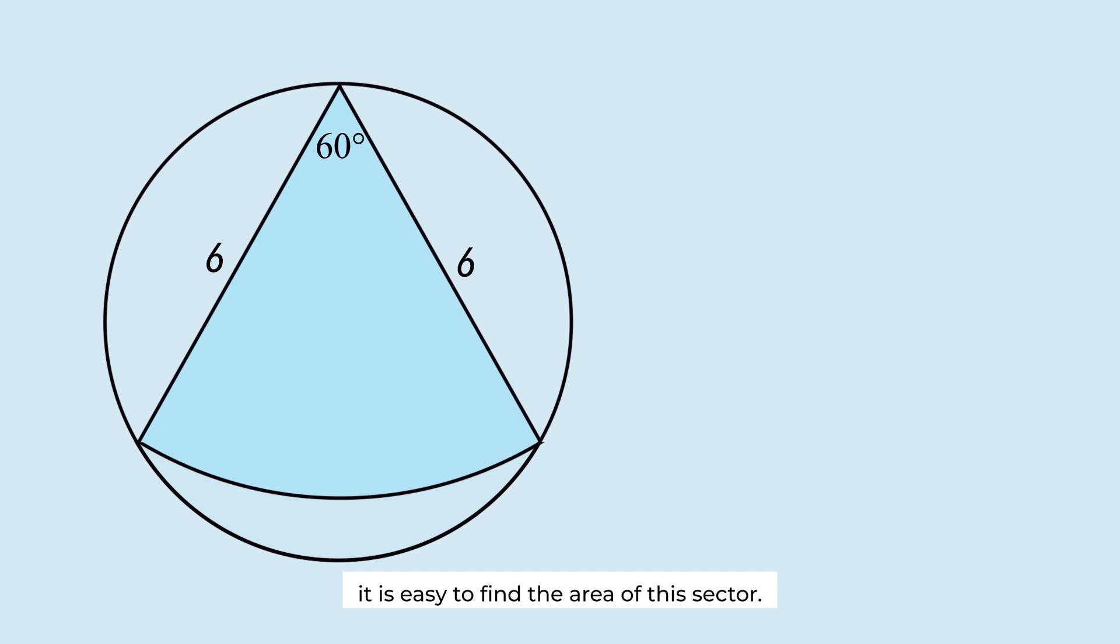It is easy to find the area of this sector. Since the central angle of this sector is 60 degrees, the sector is 1 over 6 of the circle with a radius of 6. Thus, the area of the sector is also 1 over 6 of the area of that circle.